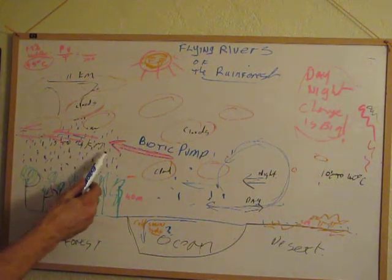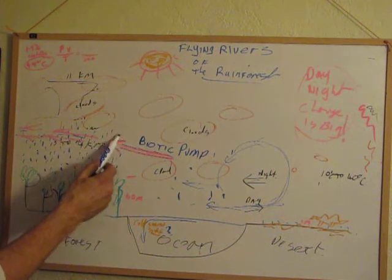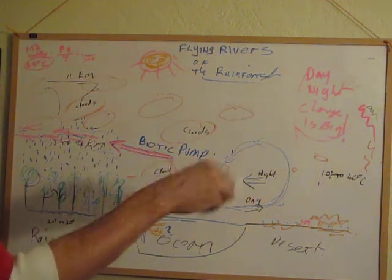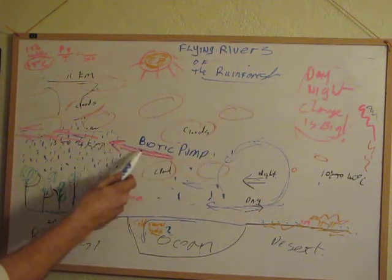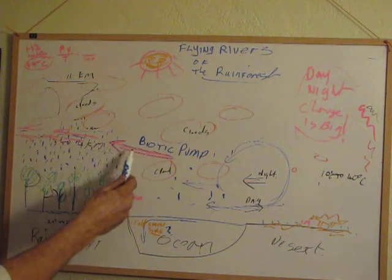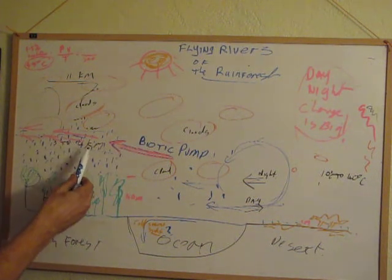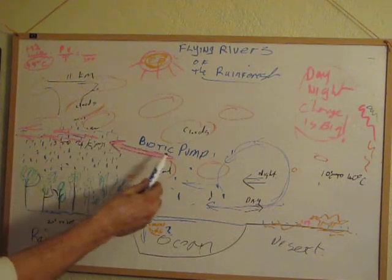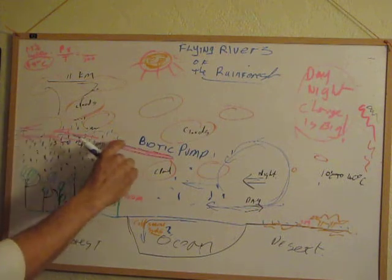We have this area where the flying rivers go through — moisture from the ocean flowing inland at maybe two to five kilometres high.